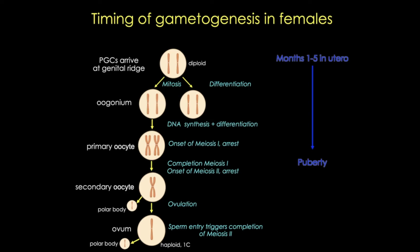These cycles begin at puberty and they continue until the onset of menopause, which is at roughly 50 years of age. Why is the timing different, and what makes a primordial germ cell differentiate as either a spermatogonia or an oogonia? Research suggests that all of these cells, regardless of genotype, are programmed to develop first as oocytes, but there are actually inhibitors in the male genital ridge that inhibit meiosis, while other factors actually drive meiosis in females.